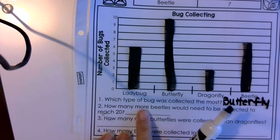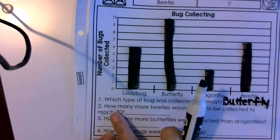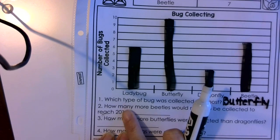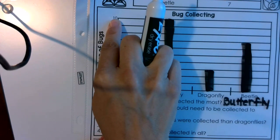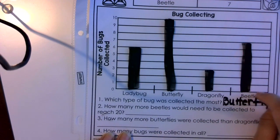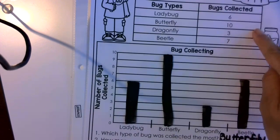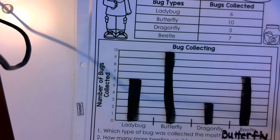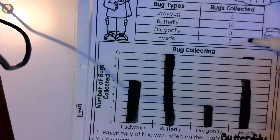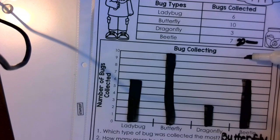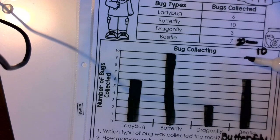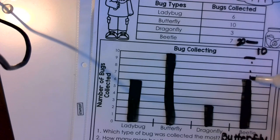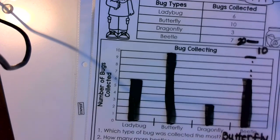Number two: how many more beetles would need to be collected to reach 20? This is a tricky question because if you look, our chart only goes to 10. We have to figure out how many more beetles need to be collected to get us up to 20. The easiest way I would think is if we look — we know to get from 10 up to 20 would be 10 more. But then I still need to get to the beetle's number, which is 7. So I would need 10 plus 3 more: 10, 11, 12, 13. I would need 13 more beetles to get all the way up to 20.